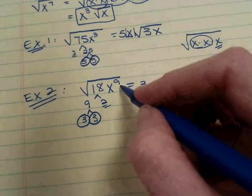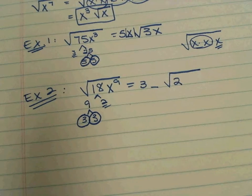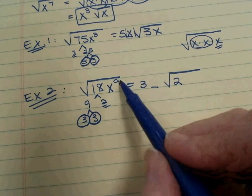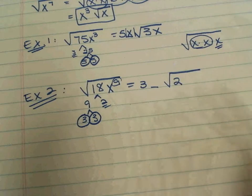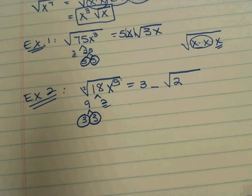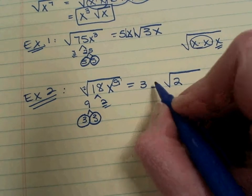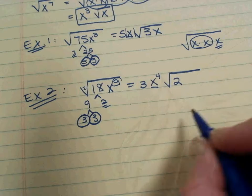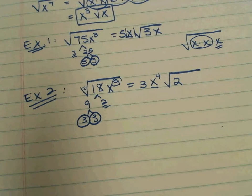x to the 9th. Another way to think about this is divide the exponent by the index. What's the index if there's no number there? 2. So what's 9 divided by 2? 4. So x to the 4th would break free. So if I were to write out all my x's, I would find 4 pairs. And then how many would be left over?